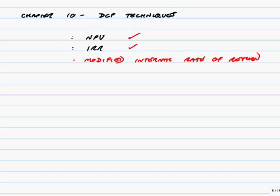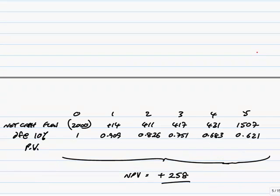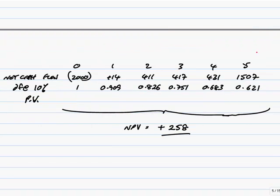Anyway, let's look at modified internal rate of return. If you look back at example 1, in example 1, we set up the cash flows. We discounted at the cost of capital, which was 10%.